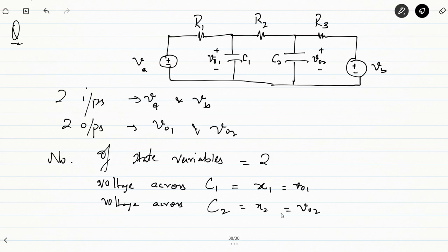We need to find X1-dot and X2-dot — the derivatives of voltages V01 and V02. Let I1 be the current in the first circuit branch, I2 flowing through this branch, and I3 flowing through this branch. Let the voltage at node 1 be V1 and the voltage at node 2 be V2.